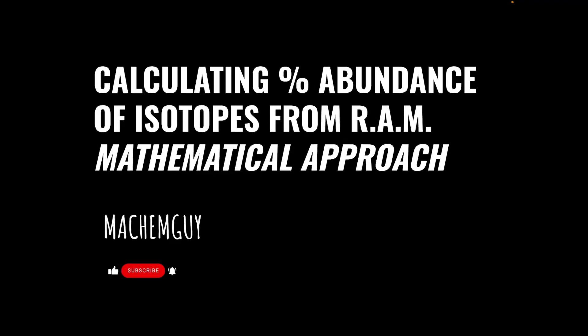Hi everyone, I thought I would do a video that looked at how you calculate the percentage abundance of isotopes from relative atomic mass, but using a mathematical approach rather than the simplistic tug of war approach that I've used in a previous video. I'll put the link to that one at the top of the screen now. You can use that for simple scenarios where you have two isotopes to deal with, but if you've got three isotopes you need to use this mathematical approach.